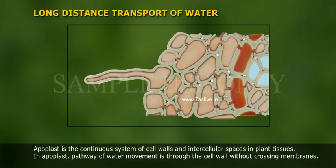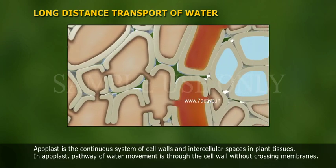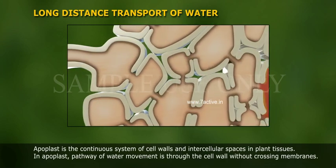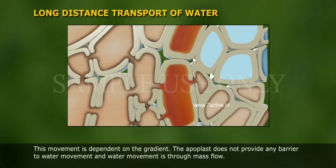Apoplast is a continuous system of cell walls and intercellular spaces in plant tissues. In apoplast, the pathway of water movement is through the cell wall without crossing membranes. This movement is dependent on the gradient. The apoplast does not provide any barrier to water movement, and water movement is through mass flow.